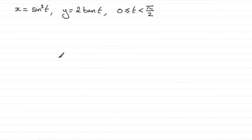Now for this part of the question, we're given this parametric equation for a curve C. We're told that x equals sine squared t and y equals 2 tan t, for t greater than or equal to 0 but less than π over 2.